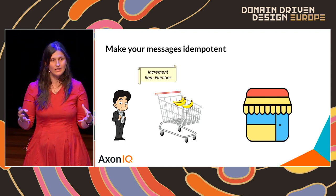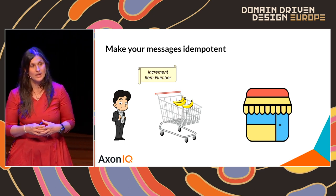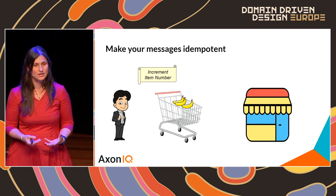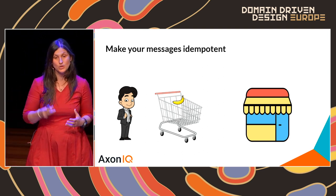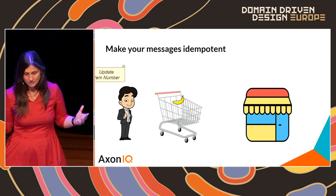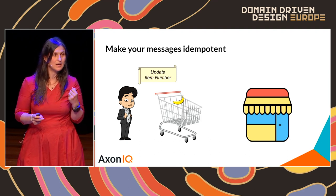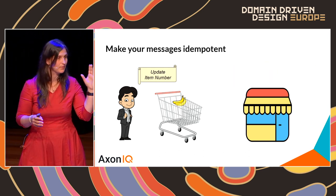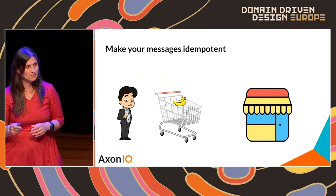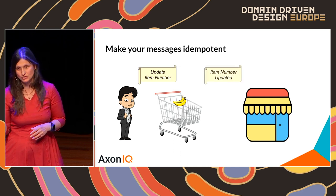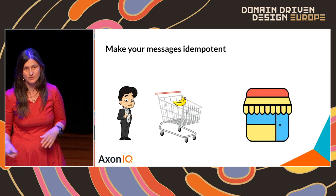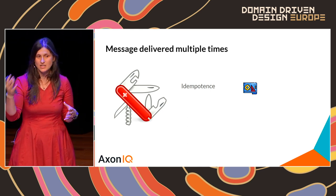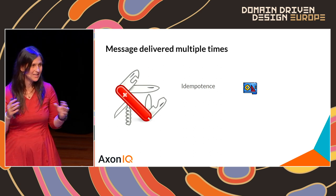Instead, use a semantically different command like 'update item number': set the quantity to two. The first time it executes, bananas go from one to two. If the same message is mistakenly delivered twice, the consequence is harmless — bananas go from two to two again. Designing execution to be idempotent is key to making applications very resilient.